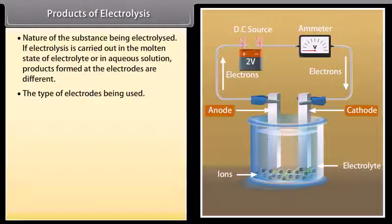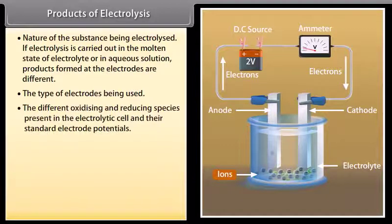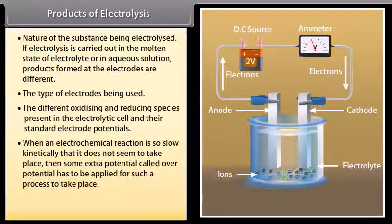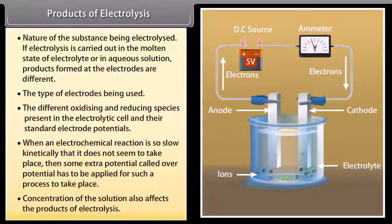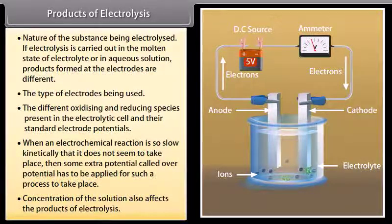The different oxidizing and reducing species present in the electrolytic cell and their standard electrode potentials. When an electrochemical reaction is so slow kinetically that it does not seem to take place, then some extra potential called over potential has to be applied for such a process to take place. Concentration of the solution also affects the products of electrolysis.